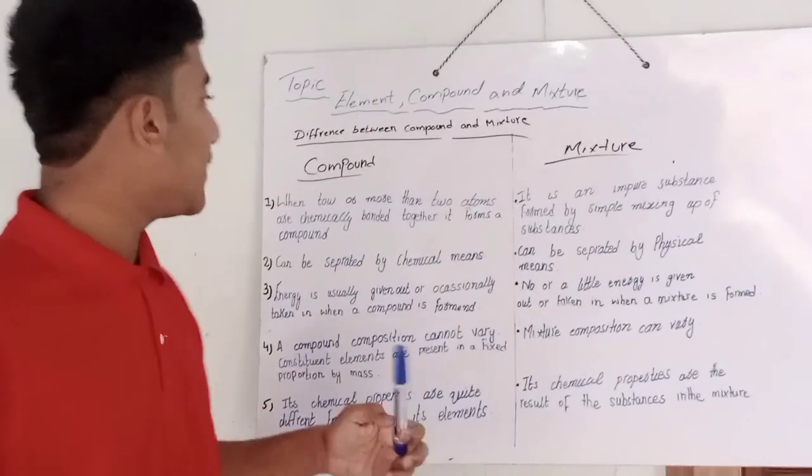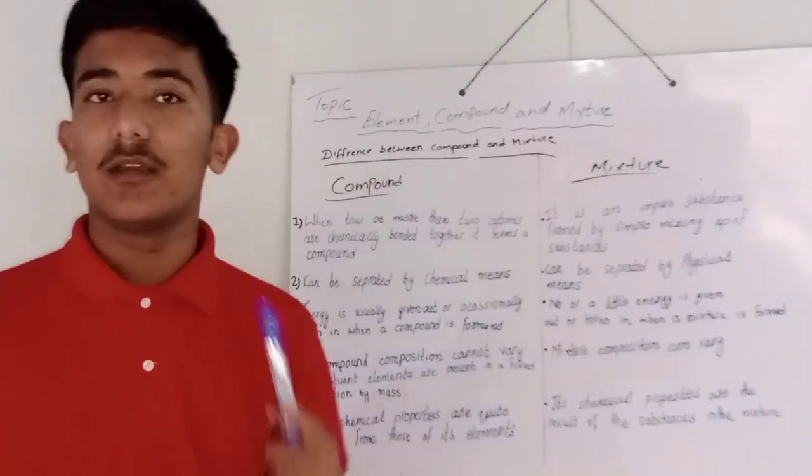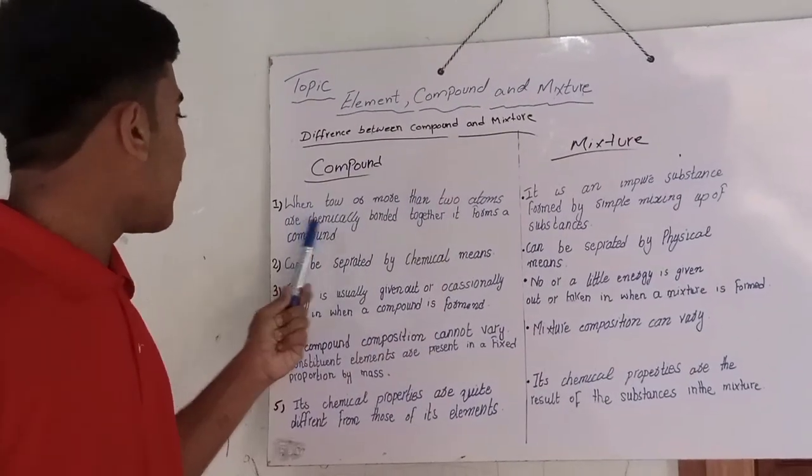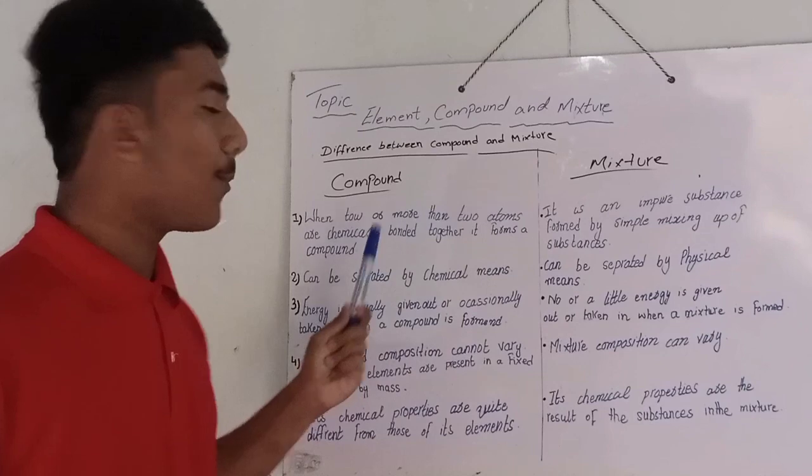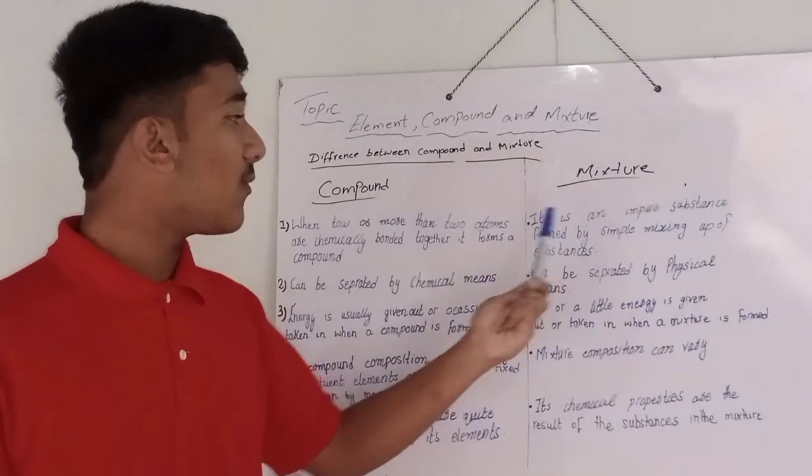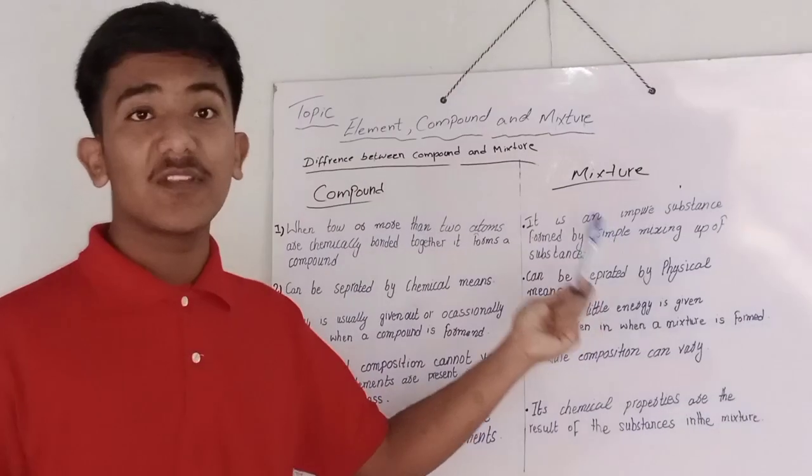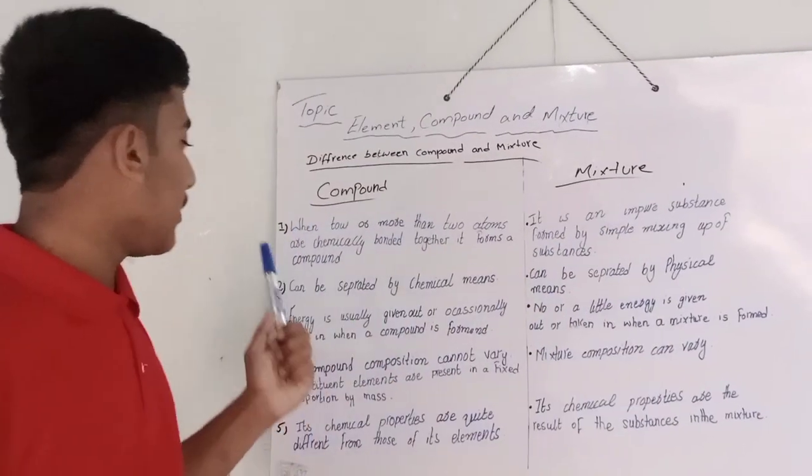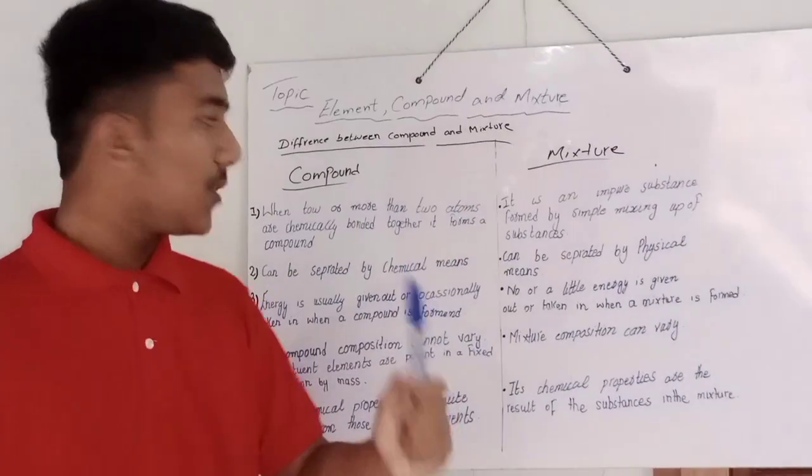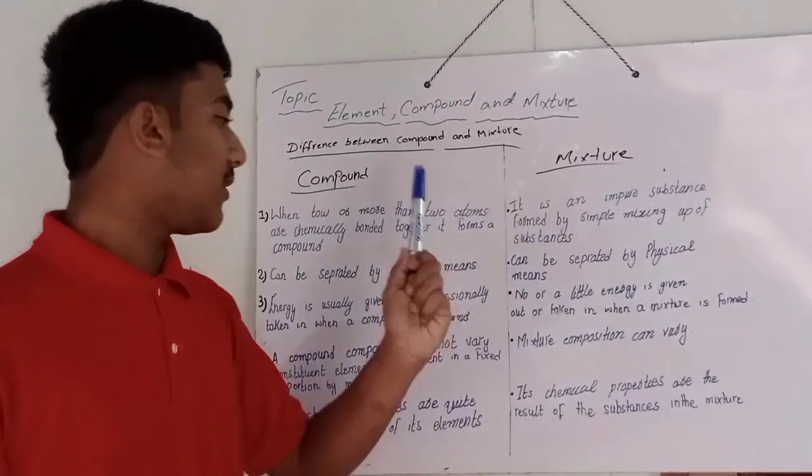I will explain you about the difference between compound and mixture. When two or more than two atoms are chemically bonded together, it forms a compound. Mixture, it is an impure substance formed by simple mixing of two substances. Two, compounds can be separated by chemical means and mixture can be separated by physical means.